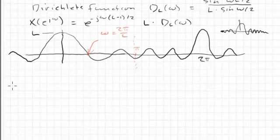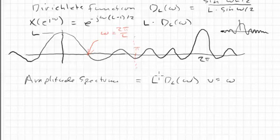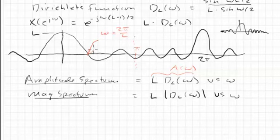Just a few remarks about it. Amplitude spectrum. Amplitude implies it can go negative is just equal to L times the Dirichlet function, right? And we plot it versus omega. And this is the same thing as we were talking about previously. This is just A of omega, purely real. We can have a magnitude spectrum, which of course is the magnitude of this, L magnitude DL of omega. So it's just the absolute value of this thing.